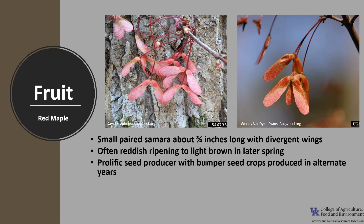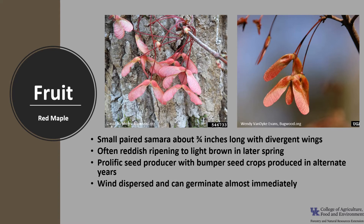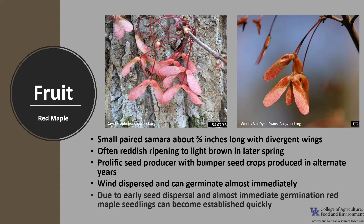Red maple is a prolific seed producing tree, and trees as young as four years may begin to bear seed. Bumper crops are usually produced in alternate years, with a 12-inch diameter tree yielding nearly a million seeds. Seeds are wind dispersed and can germinate almost immediately, giving red maple seedlings a three to four month advantage over most associated woody species.